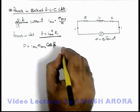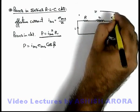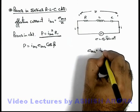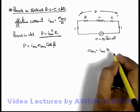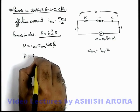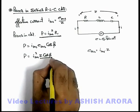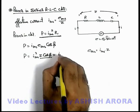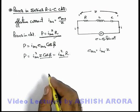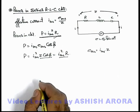These two expressions give one and the same thing, because if the overall circuit impedance is Z, then we can write E_rms equals I_rms multiplied by Z using Ohm's law. Substituting E_rms, we get I_rms squared times Z times cos φ. From the impedance triangle, Z times cos φ equals the resistance R of the circuit, which gives I_rms squared times R.